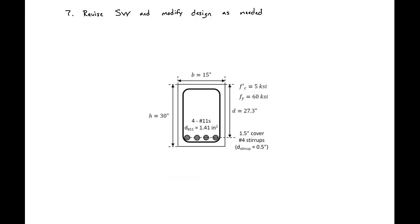The final step would be to revise our self weight and modify the design as needed. But since we were given our section dimensions, we don't need to revise our self weight. This is our final design. We found that the steel that we would need in this section is four number 11 bars.